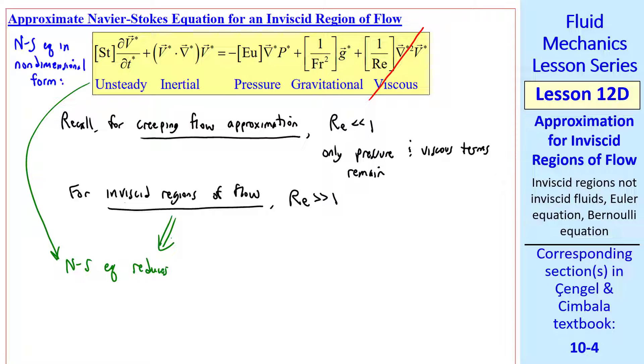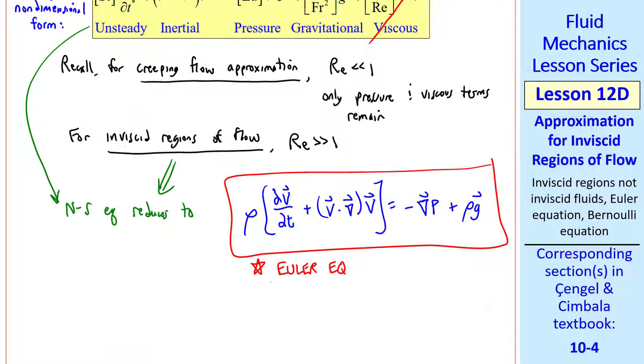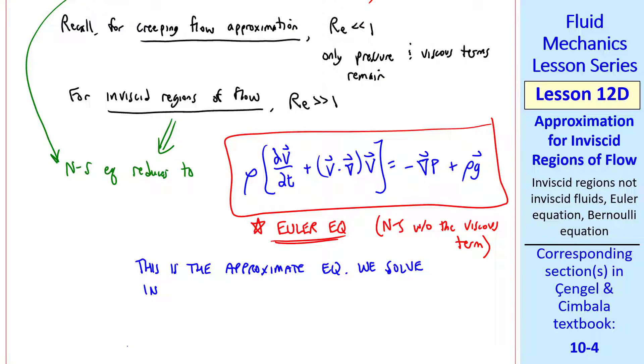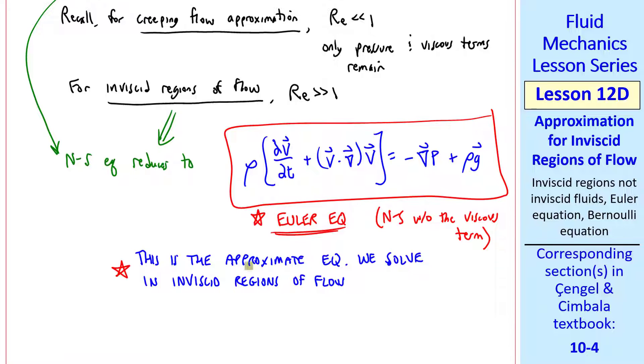For inviscid regions of flow then, the Navier-Stokes equation reduces to rho del v del t plus v dot del v equals negative gradient of p plus rho g, where I've gone back to the dimensional form of the equation. This is called the Euler equation. It's the Navier-Stokes equation without the viscous term. This is the approximate equation we solve in inviscid regions of flow. Keep in mind that this is an approximate equation, but it's easier to solve than the full Navier-Stokes equation, which is the whole reason we're doing this in the first place. And as I mentioned for the airfoil case, there are flows where this Euler equation is quite useful and can yield fairly accurate predictions.